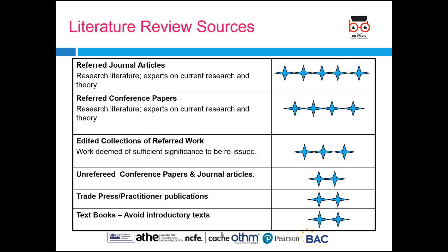Looking at the weightage of each literature source: preferred peer-reviewed journal articles are given the best quality rating — they are the best ones you can refer to, providing research literature and expert perspectives on current research and theory. Then you have referred conference papers, which also provide insight into literature and current research and theory, though slightly below peer-reviewed journals. Then you can use edited collections of referred works — these are generally deemed of sufficient significance to be reissued, meaning the original work has been reviewed and presented in a new format.